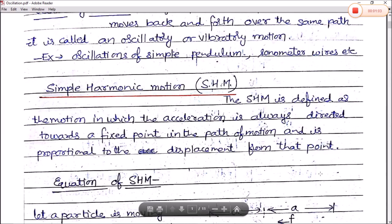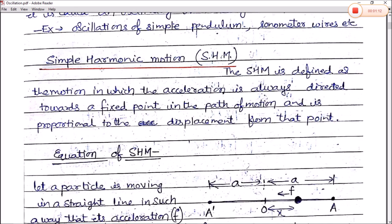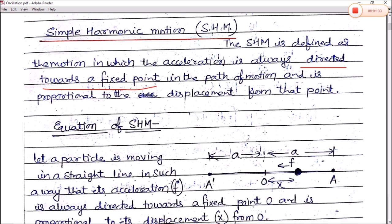In physics, all these types of motions are classified under simple harmonic motion, also called SHM. SHM is defined as the motion in which the acceleration is always directed towards a fixed point and is directly proportional to the displacement from that fixed point.